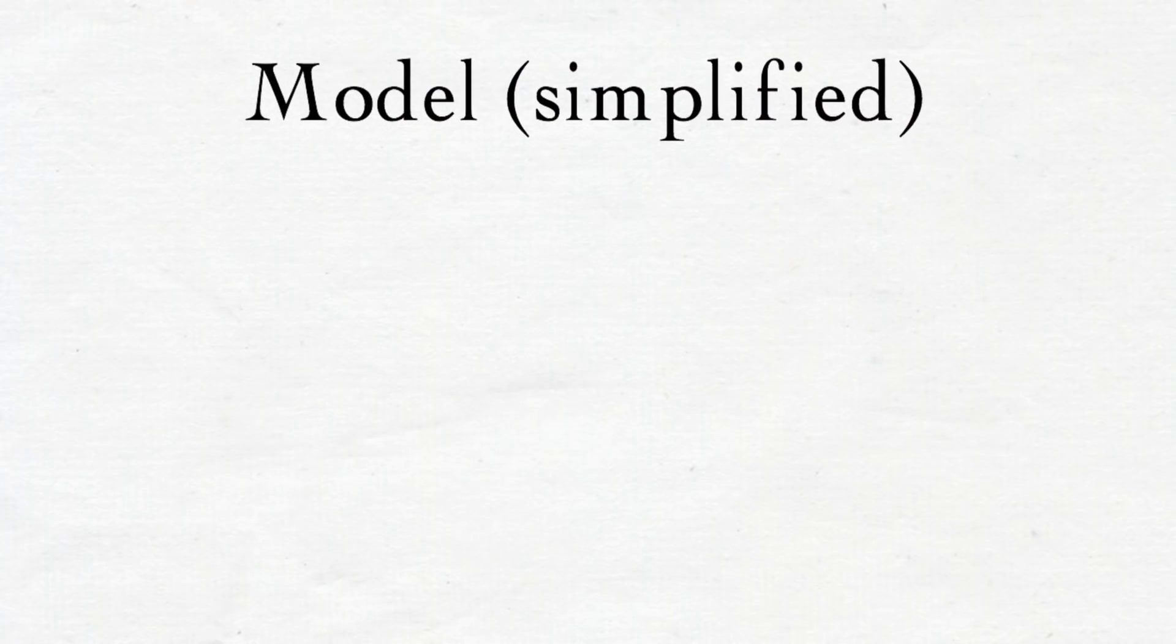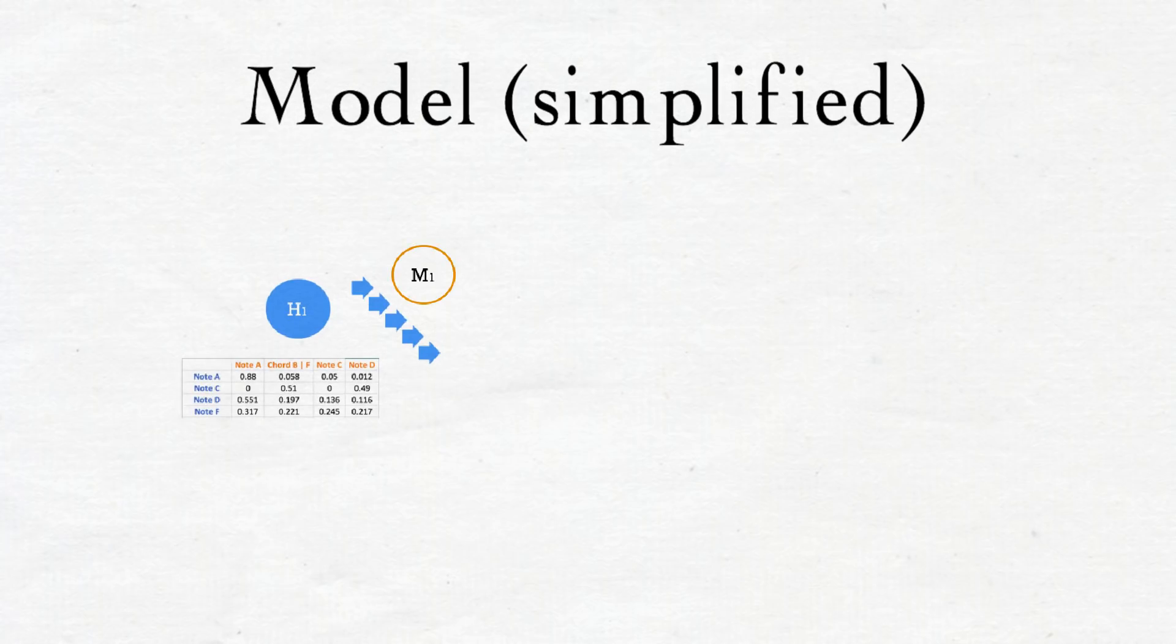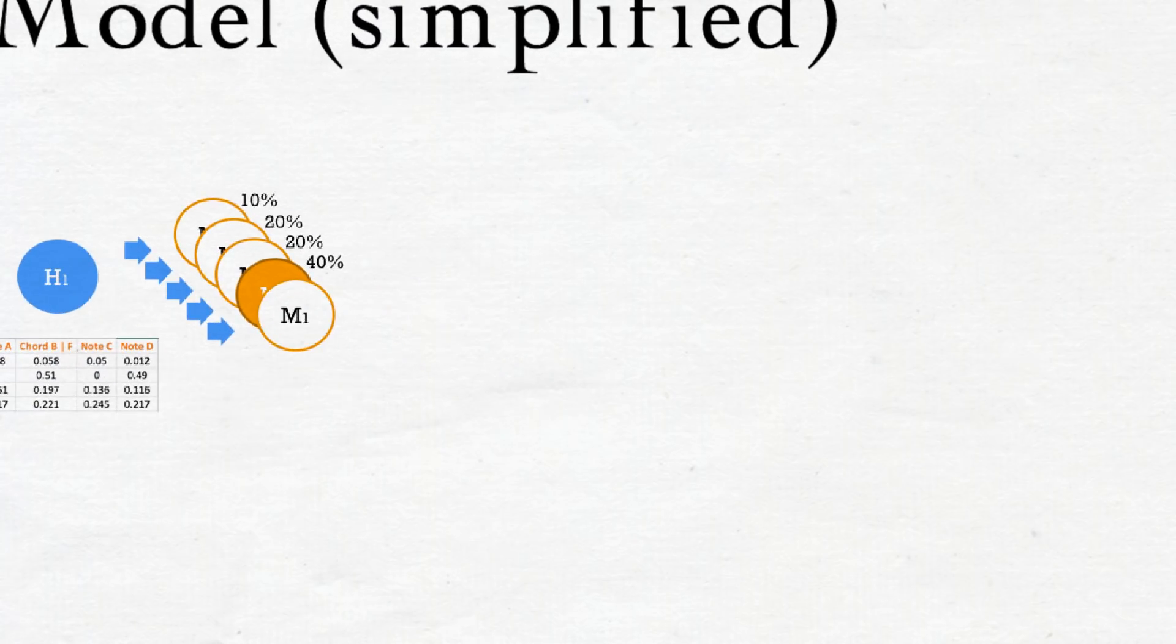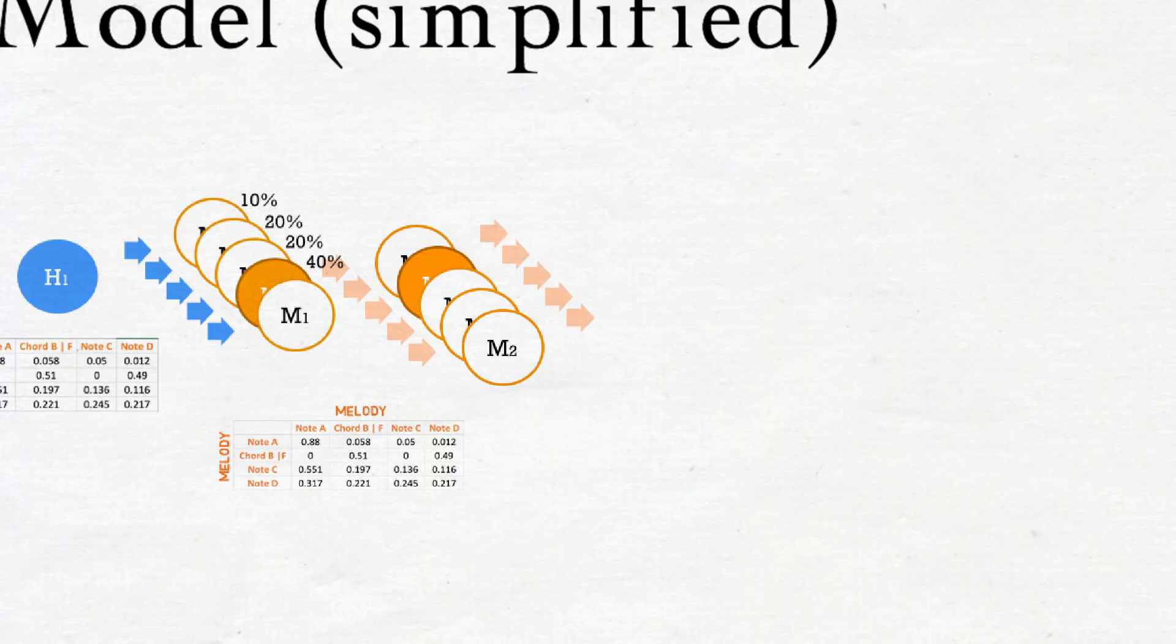First, my machine selects a harmony note based on its probability distribution. This note will be responsible for selecting the next melody note. The selection will be done through the probability matrix that we have seen earlier. For instance, given that particular harmony note, the first melody note might have a 10% of being selected, the next one 20%, the next one the same, and this one has 40%, which means that the machine might select this harmony note based on its higher likelihood. This chosen melody note will be responsible for selecting the next melody note using the other probability matrix. It chooses the second option based on its high likelihood, and so on.